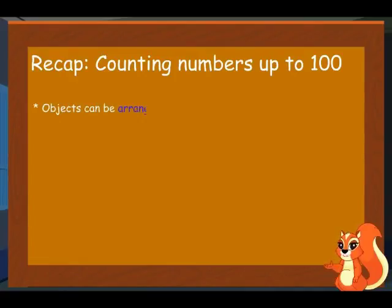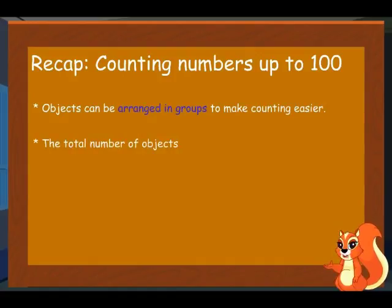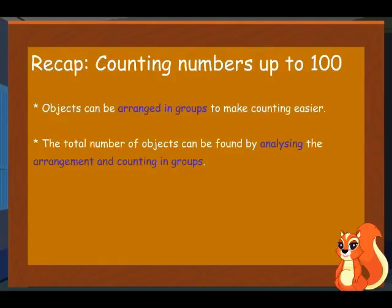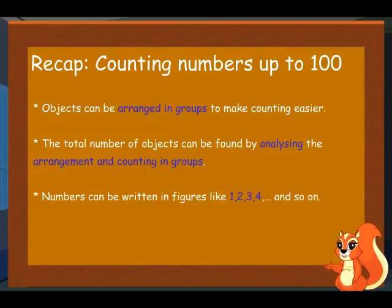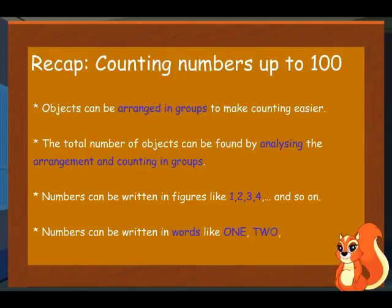Objects can be arranged in groups to make counting easier. The total number of objects can be found by analyzing the arrangement and counting in groups. Numbers can be written in figures like 1, 2, 3, 4 and so on. Numbers can be written in words like one, two, three and so on.